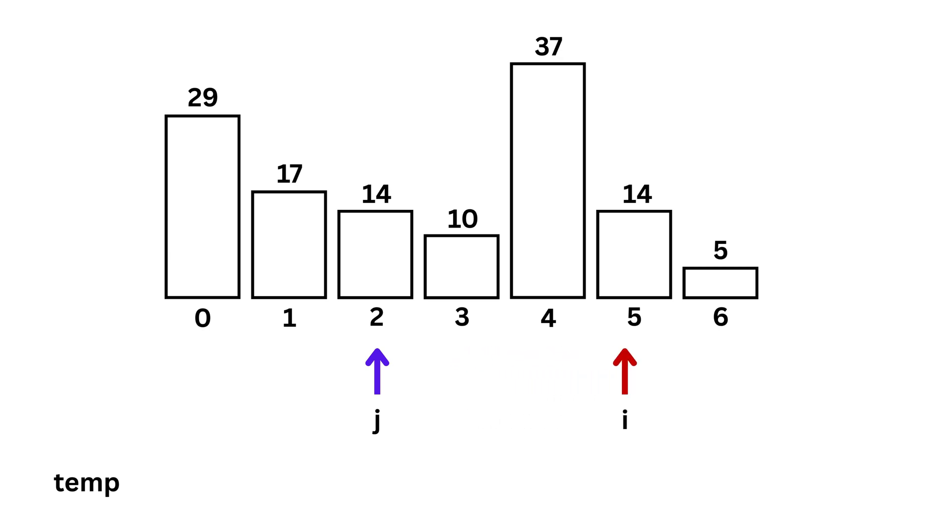i is the pointer that moves forward from left to right. It shows the position of the current number we are trying to insert in the right place. It starts from index 1 because the first number, at index 0, is already considered sorted.